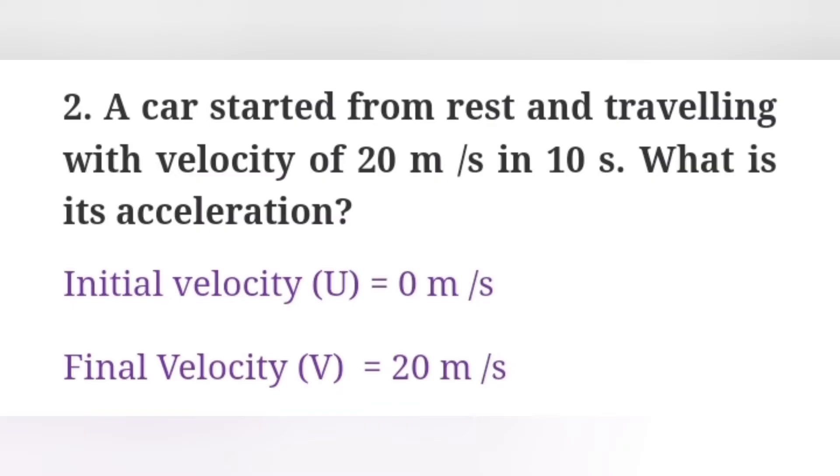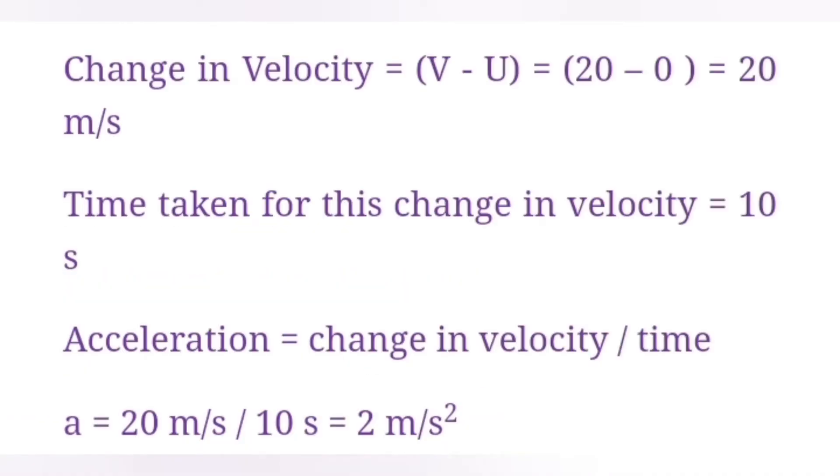Second one: A car started from rest and traveling with velocity of 20 m/s in 10 seconds. So what is its acceleration? Answer: Initial velocity U = 0 m/s. Final velocity V = 20 m/s. Change in velocity = V - U = 20 - 0 = 20 m/s. Time taken for this change in velocity = 10 seconds. Acceleration = change in velocity / time. Then A = 20 m/s / 10 seconds = 2 m/s².